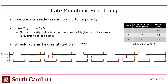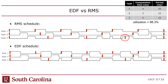There is a downside to RMS: it's not optimal. EDF will work as long as utilization is less than 100%, but RMS won't necessarily work even if utilization is under 100% because it uses static priorities. Here's an example: utilization of 98.3% — less than 100% — so EDF can schedule it. But with RMS, task 3 actually misses a deadline. It's strange because RMS didn't fail at the beginning — it worked for a while and then failed partway through.